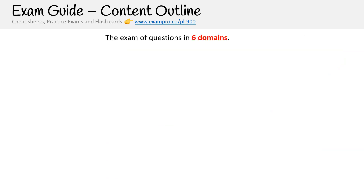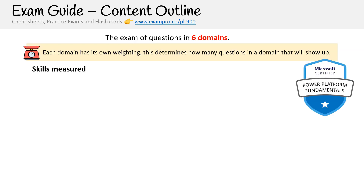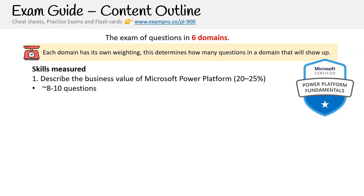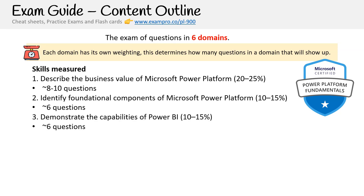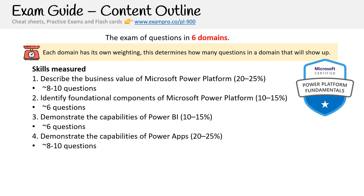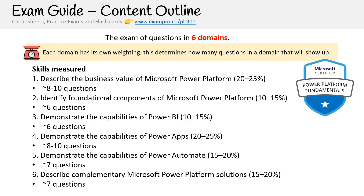The certification exam consists of six domains, each with its own weightage. Domain one, business value of Microsoft Power Platform, is 20 to 25%. Domain two, identify foundational components of Microsoft Power Platform, is 10 to 15%. Domain three, the capabilities of Power BI, is 10 to 15%. Domain four, the capabilities of Power Apps, is 20 to 25%. Domain five, capabilities of Power Automate, is 15 to 20%. And domain six, complementary Microsoft Power Platform solutions — which include Power Virtual Agents and Power Pages — is 15 to 20%.